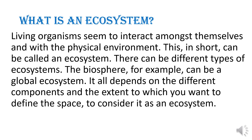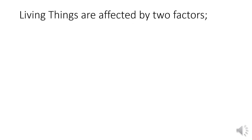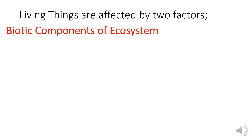What is an ecosystem? Living organisms interact amongst themselves and with the physical environment — this, in short, can be called an ecosystem. There can be different types of ecosystems; the biosphere, for example, can be a global ecosystem. It all depends on the different components and the extent to which you want to define the space to consider it as an ecosystem.